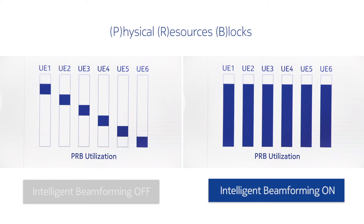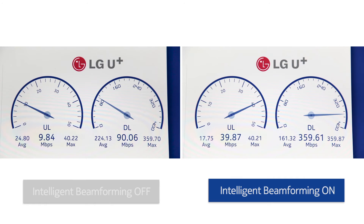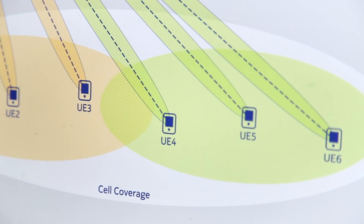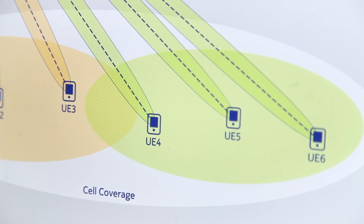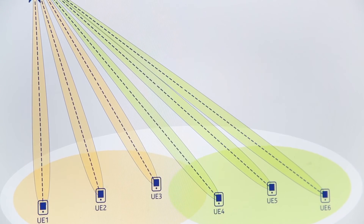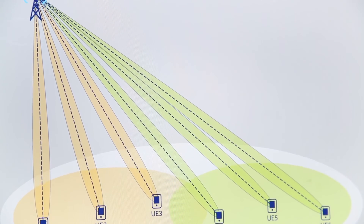This enables co-scheduling of packet resource blocks for each user and hence the increase in uplink and downlink throughput. We also manage interference by using a common channel with the beam covering an entire cell and by using an adaptive beam for each user.